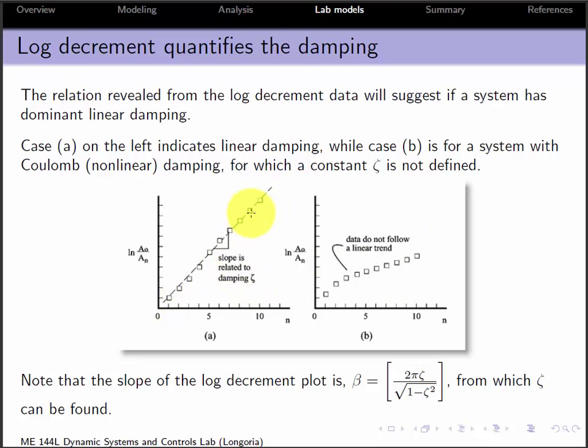Whereas this one, if you have a straight line, I can model this with linear damping. And this slope here is related to ζ. It's not ζ, it's actually β. So you take the number from here, that's β, and then you solve this simple quadratic equation for ζ.